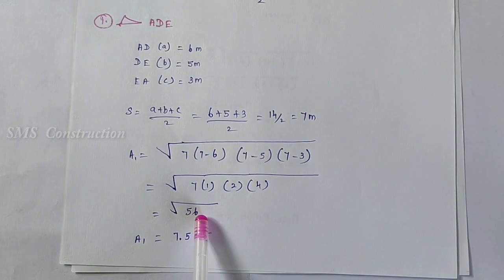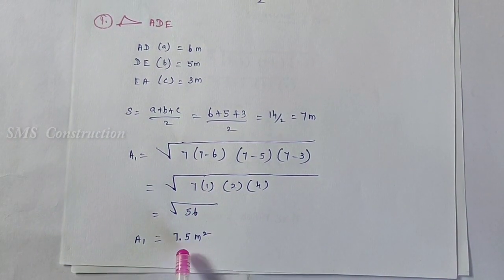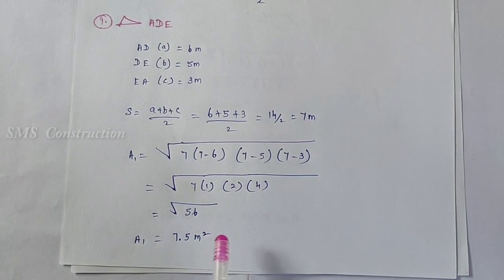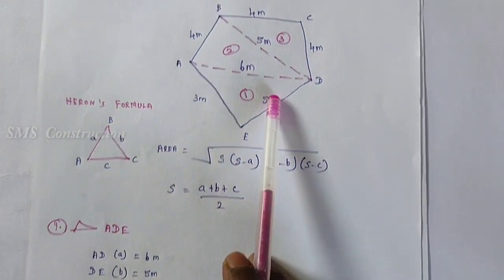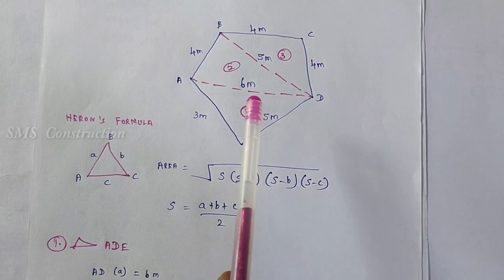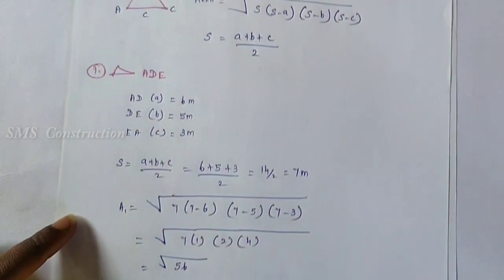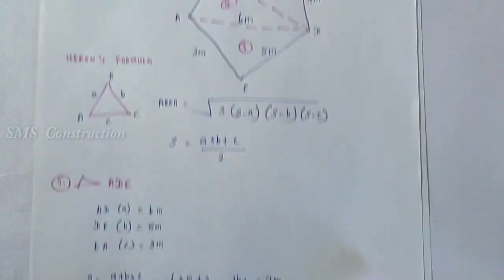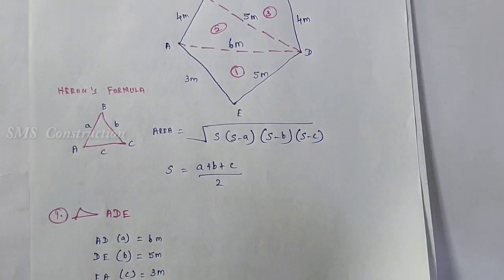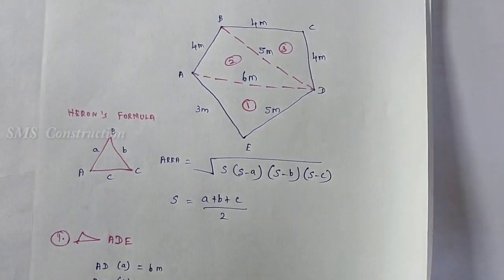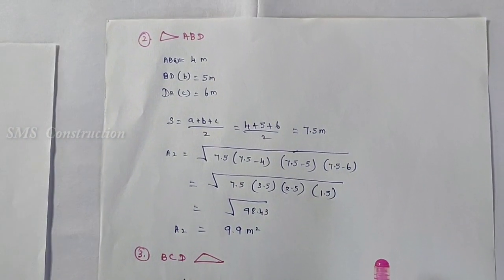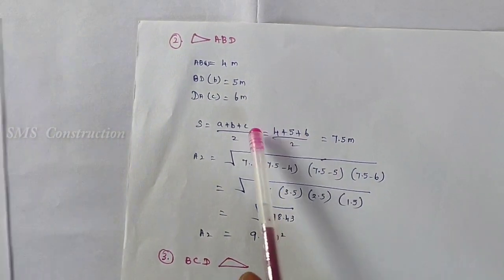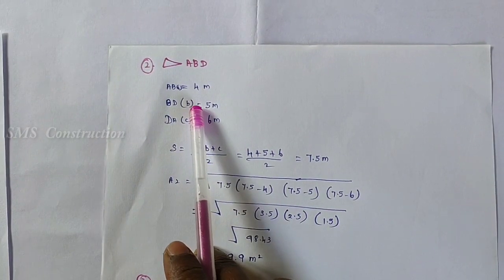S minus C is 7 minus 3, which equals 4. In the rest of this area, we are going to give the total in every triangle.